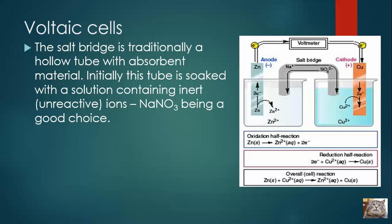What's the salt bridge? Traditionally, it's just a little hollow glass tube that's got some absorbent material in it, and you want to soak it with ions to get the ball rolling. The cell will not operate without the salt bridge — it's like having an incomplete circuit. You want to soak it with something that's inert, not very reactive, like a sodium nitrate solution. You don't want side reactions occurring and you don't want precipitates forming. Sodium ions and nitrate ions are really unreactive, so you want something nice and inert in the salt bridge.